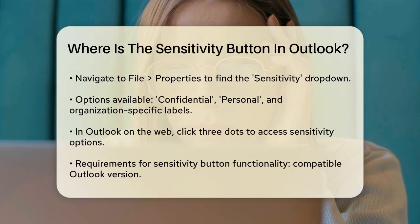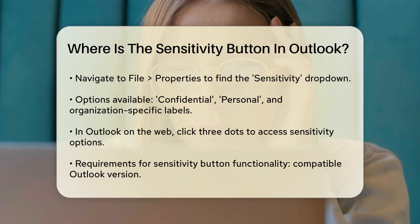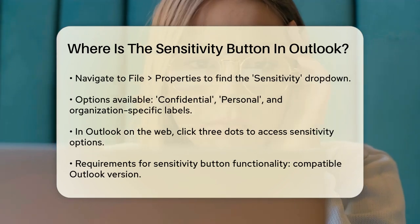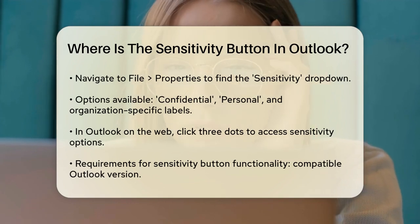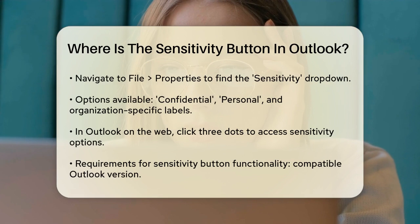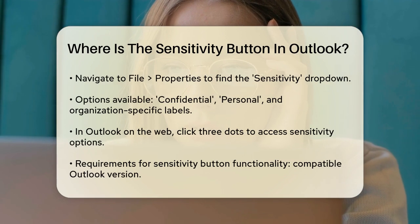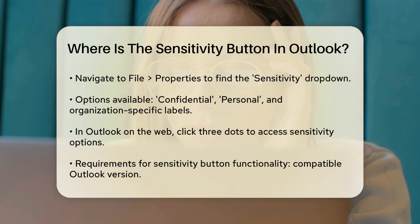In Outlook on the web, the process is slightly different. You can find the Sensitivity option by clicking on the three dots at the right side of the pane and selecting Sensitivity from the dropdown menu.